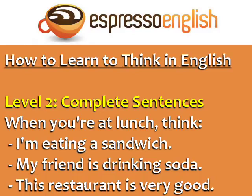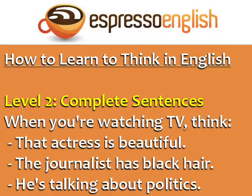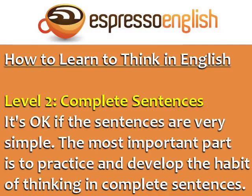Level 2 is thinking in complete English sentences. On this level, you think in complete phrases and sentences during the day. When you're watching TV, think: 'That actress is beautiful,' 'The journalist has black hair,' or 'He's talking about politics.' It's okay if the sentences are very simple. The most important part is to practice and develop the habit of thinking in complete sentences.